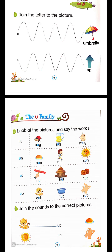Sun means kya hota hai? Suraj. Phir ut — C, ut — cut. H, ut — hut. N, ut — nut. Cut means kaatna. Hut means jhopdi. Nut means a crunchy gharo.